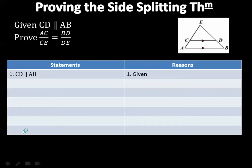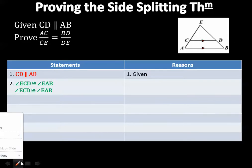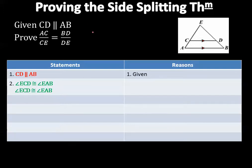The next row in the proof: since CD is parallel to AB, angle ECD is congruent to angle EAB, and angle EDC is congruent to angle EBA. I've color-coded these for a reason you'll see in a moment — let me mark up the diagram as we work through this.